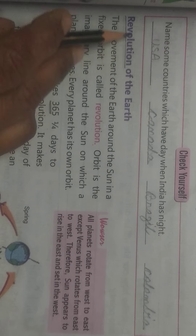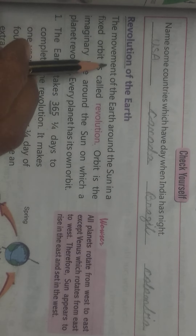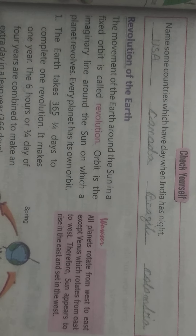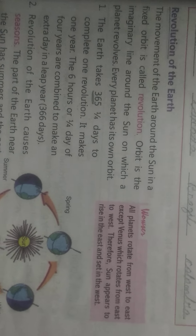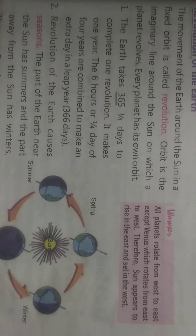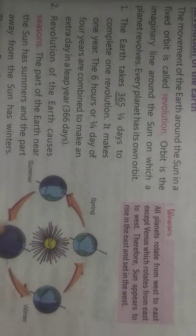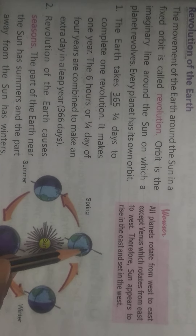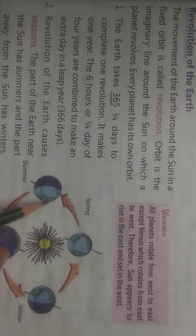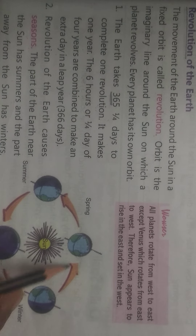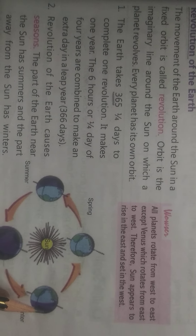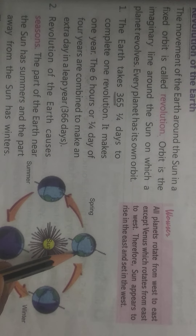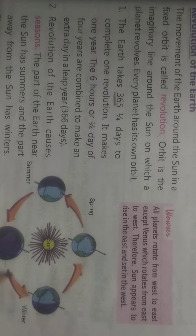What is the definition of revolution? The movement of the earth around the sun in a fixed orbit is called revolution. You can see this picture clearly — this is the revolution of the earth. This is the sun and this is the earth. Simply, sun ke charo aur ghumti hai na, usko revolution kaha jata hai.